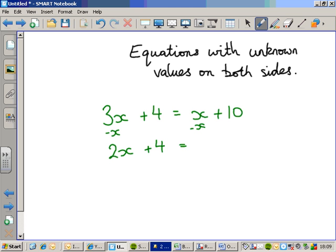We've still got the plus four. And on the right-hand side, the x is gone, but we've still got the plus ten. So we have 2x plus 4 equals 10. And that's more like something we recognize, that's an equation we can solve quite easily.